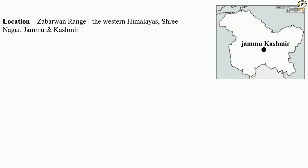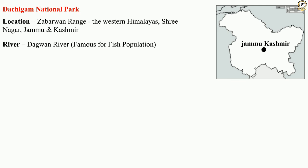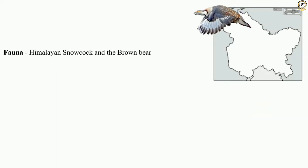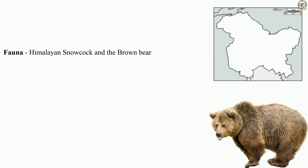We can find the Dachigam National Park, located in the western Himalayas, Srinagar, Jammu and Kashmir. The Dagwan River, famous for its fish population, passes through the national park. One can find coniferous forest here. The park is home to leopard cat, Himalayan black bear, hangul, and musk deer, as well as the Himalayan snowcock and the brown bear.